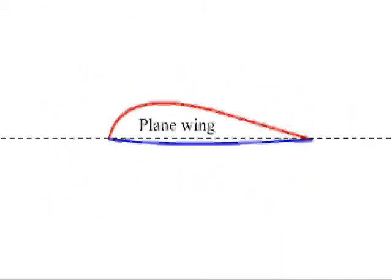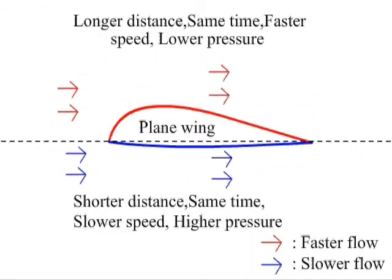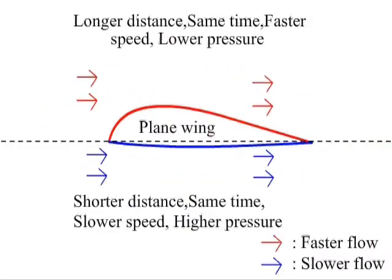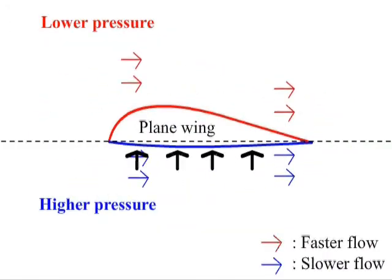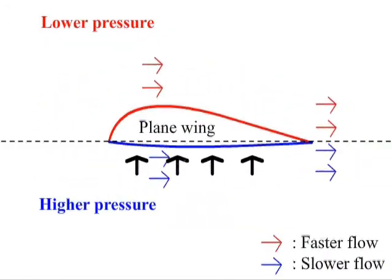This explains the region above the plane wing having a lower pressure than below the wing. Hence, there is an upward lift by the force arising from the difference in pressure.